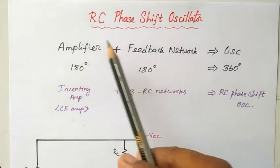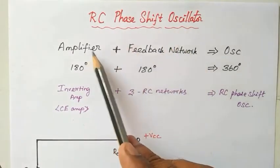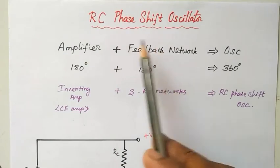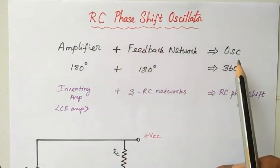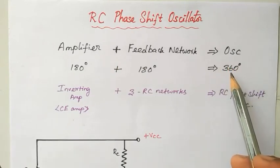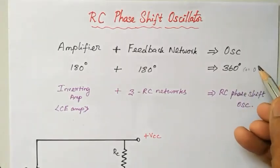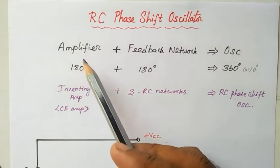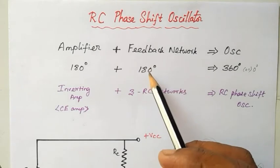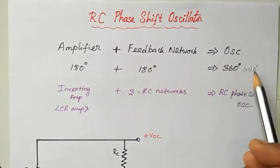Hi viewers, in this video class we are going to discuss the RC phase shift oscillator. Generally, oscillator circuits consist of two elements: one is an amplifier and the second one is a feedback network. These two circuits combined are called an oscillator. One more condition is that it has to satisfy a 360-degree or 0-degree phase shift. If the amplifier produces a 180-degree phase shift, then the feedback network also has to produce 180 degrees, so that the entire phase shift becomes 360 or 0 degrees.